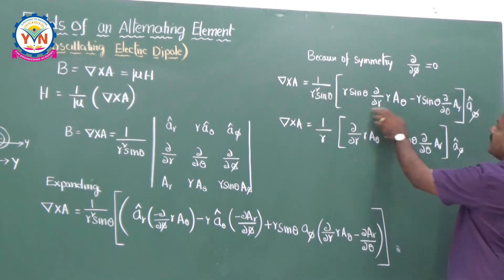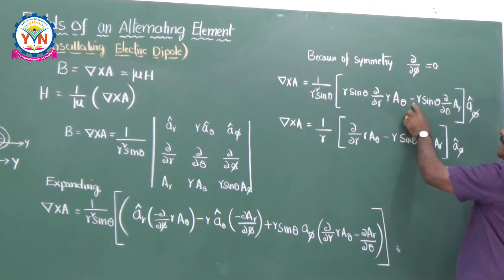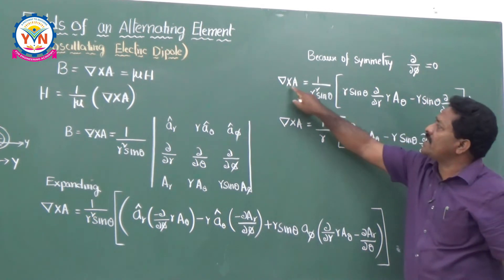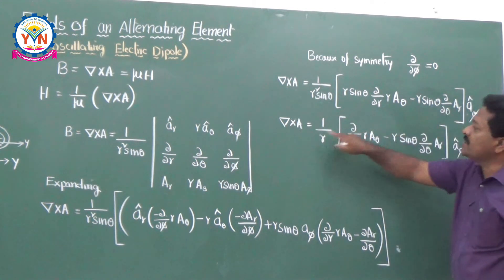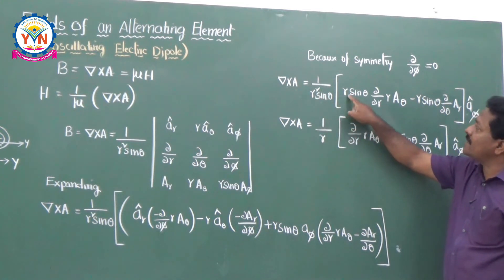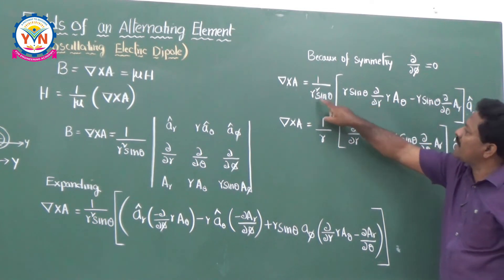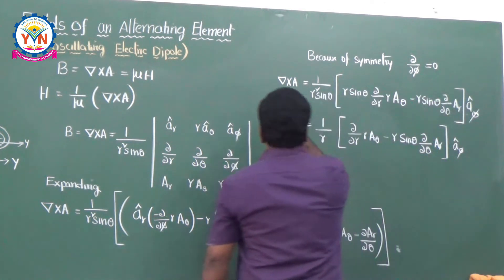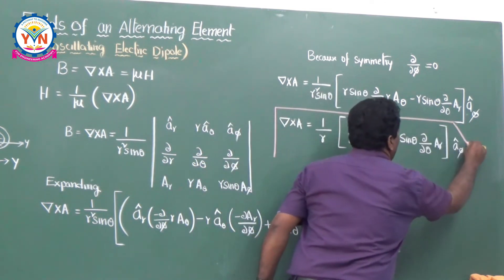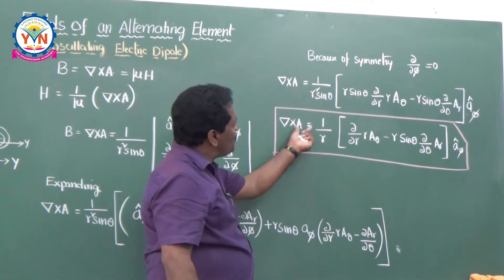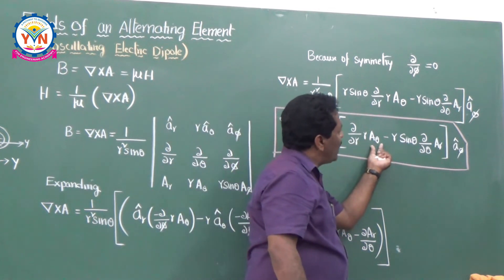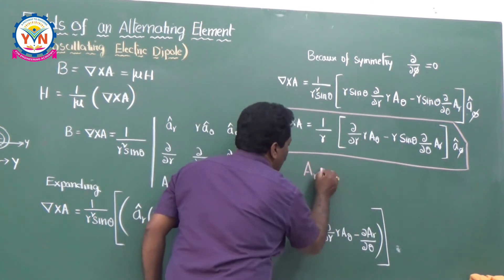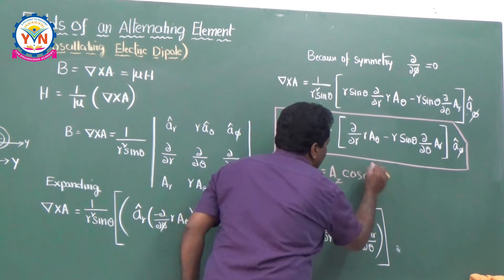With ∂/∂phi = 0 applied, ∇ × A simplifies to (1/r)[∂/∂r(r·A_theta) − ∂/∂theta(A_r)] â_phi. So ∇ × A exists only in the phi direction. After cancellation of r·sinθ terms, this is the finalized expression for ∇ × A. Now substitute A_r = A_Z cos(θ) and A_theta = −A_Z sin(θ). Recall that A_Z = (μ/4π) × IDL × cos(ω(t − R/V))/R, the vector magnetic potential in the Z direction obtained from the retarded potentials approach.